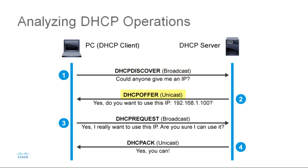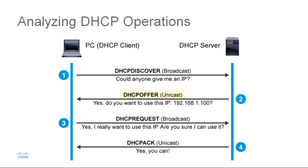The next step is the DHCP offer. When a DHCP server receives a discover message from the laptop, it selects an unused IP address from a pool and sends back a unicast DHCP offer message using UDP port number 68. This offer to the laptop contains an IP address, subnet mask, and lease duration.